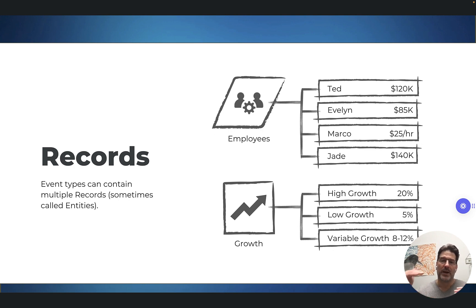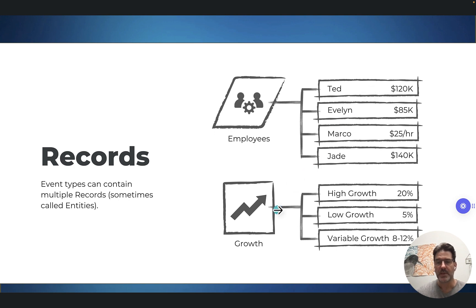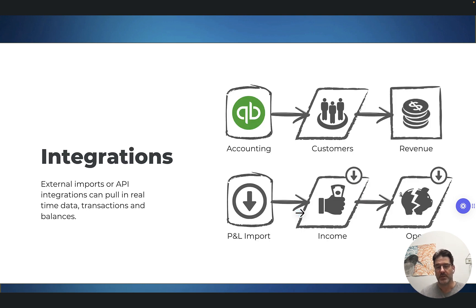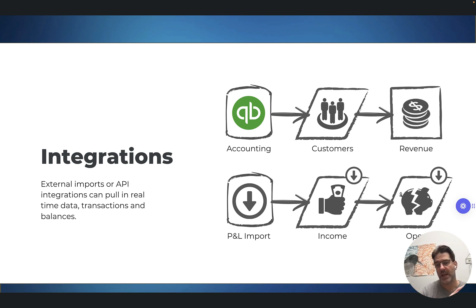Within each event, you can have multiple records — sometimes called entities — that sit inside of it. If you have all your employees, you can have 5, 10, 50, or 200 employees nested within that event, each with their own parameters. For growth, you can create different sub-records to try out different calculations like high growth, low growth, or variable growth. For integrations, in addition to QuickBooks and Xero, you can also import from a CSV file — for example, a profit and loss statement — and it will automatically generate events for you.